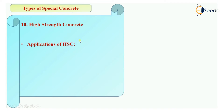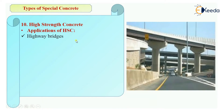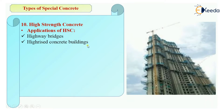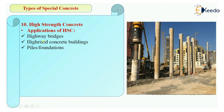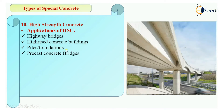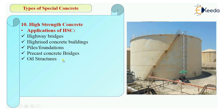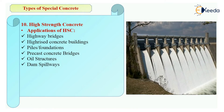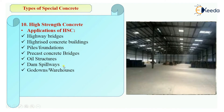The applications of high strength concrete include: highway bridges, high-rise concrete buildings where it is used for column construction due to the reduction in size of compression members, pile foundations, precast concrete bridges, oil retaining structures where oil is stored, spillways of dams, and go-downs and warehouses.